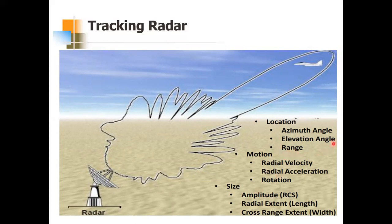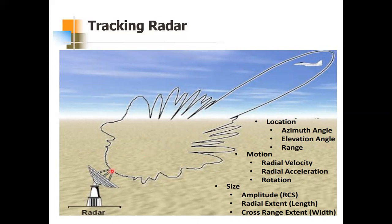This module focuses on finding the location: azimuth angle, elevation angle, and range. You may recall these from studying antennas — the theta and phi angles. Range is the distance from the radar to the target, also called slant range. This module focuses on how to find the location using azimuth, elevation, and range.